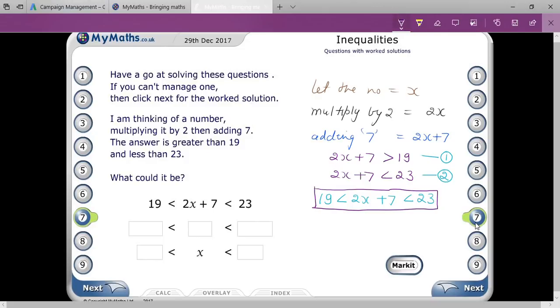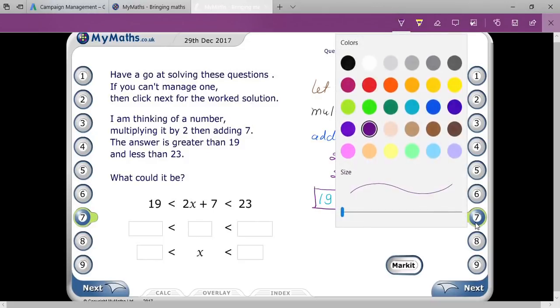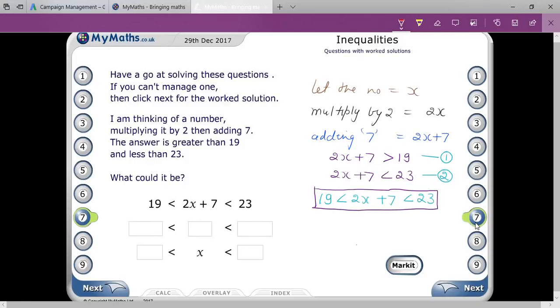So basically, as you are seeing on your screen, plus 7 is with 2X, so subtract 7 in all. When you will subtract 7 in all, the remaining you will get here is 2X because 7 and -7 will be cancelled out. 19 - 7, you will get 12, and then 23 - 7, here you will get 16.